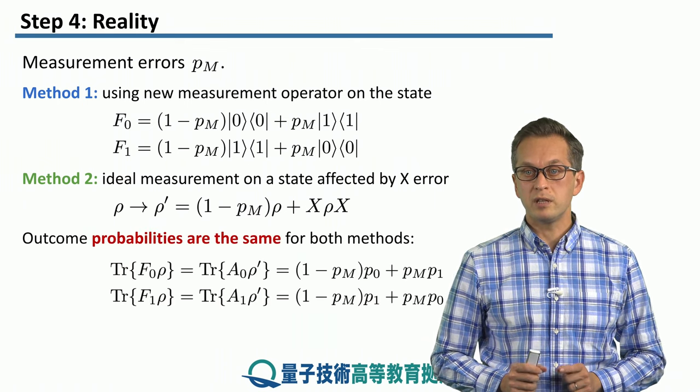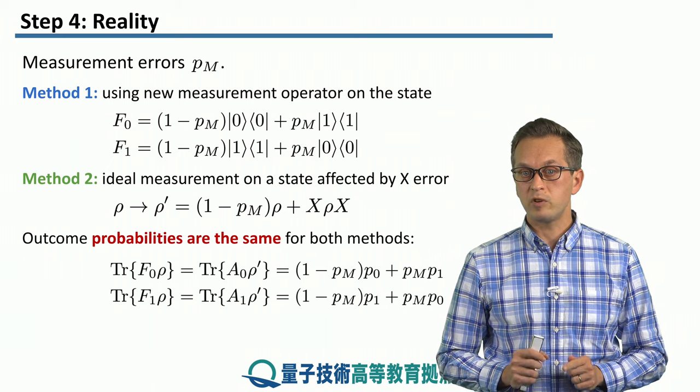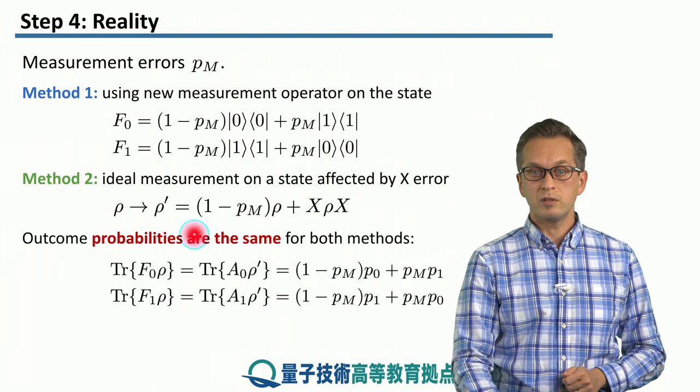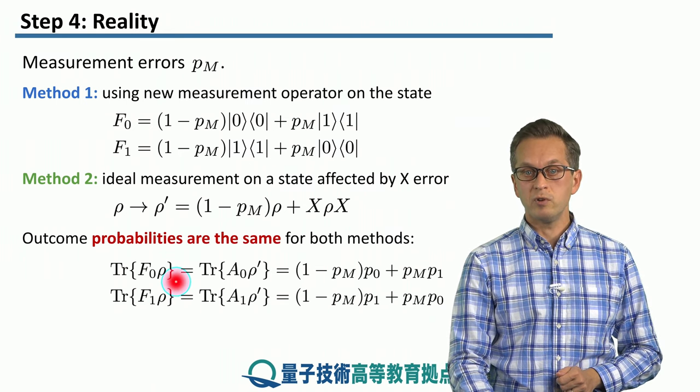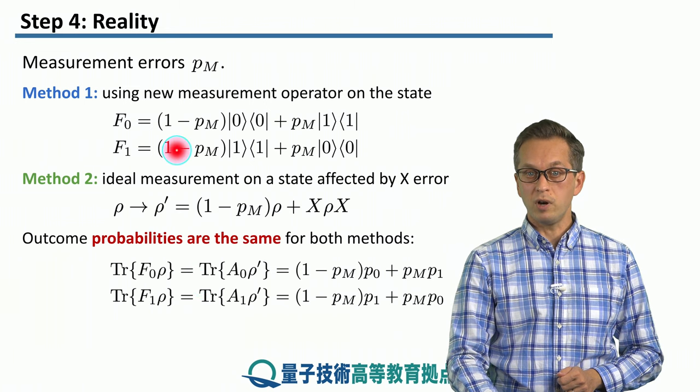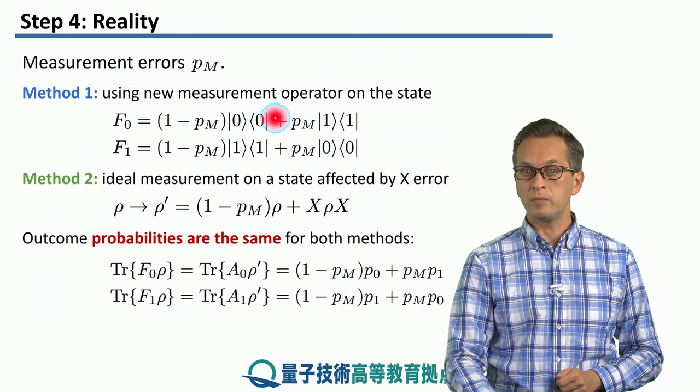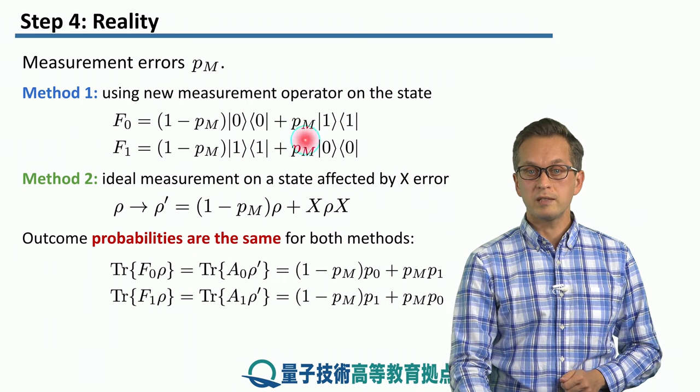Now, both of these methods, they give you the same statistics, the same probabilities. So that the trace of F0 times rho, for method one, so the probability that we obtain outcome zero, is given, is the same as for method two, where we measure the noisy state, but with ideal projectors.